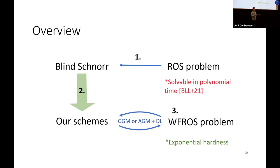In particular, I will define what is WFROS and provide some intuition behind its hardness. So to start with, I will first describe the non-blind version of blind Schnorr signatures. The public parameters consist of group G with size p and generator little g, and a hash function h.